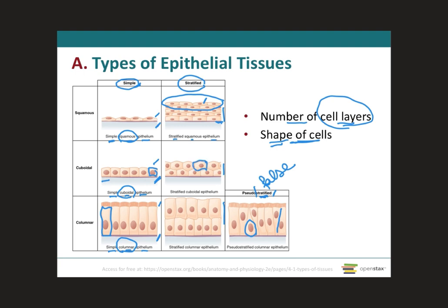These look more like a square, so they're called stratified cuboidal epithelium. These look rectangular and there's more than one cell layer, so they're called stratified columnar epithelium. And again, with regards to the pseudostratified epithelium, they are usually columnar. But because they sometimes seem like they have more than one cell layer, they're called pseudostratified columnar epithelium.